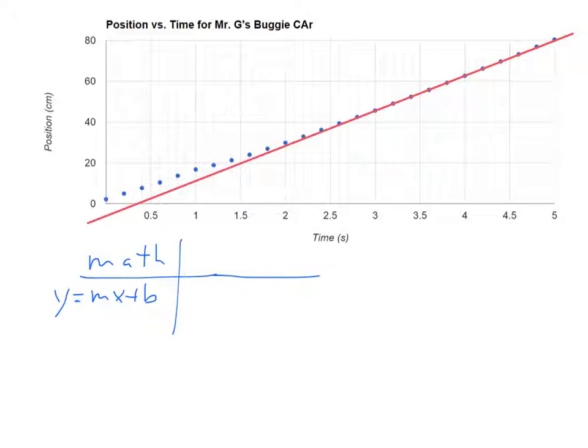But in physics we use different variables depending on what we're measuring. In our case the y variable is actually position, which the symbol we use for that is x. So now it's going to be x equals, and the x-axis in math, in our case is time, so that's going to be t. And the slope of our equation is going to represent the velocity, how much change in position there is divided by the time. So this is going to be our v.